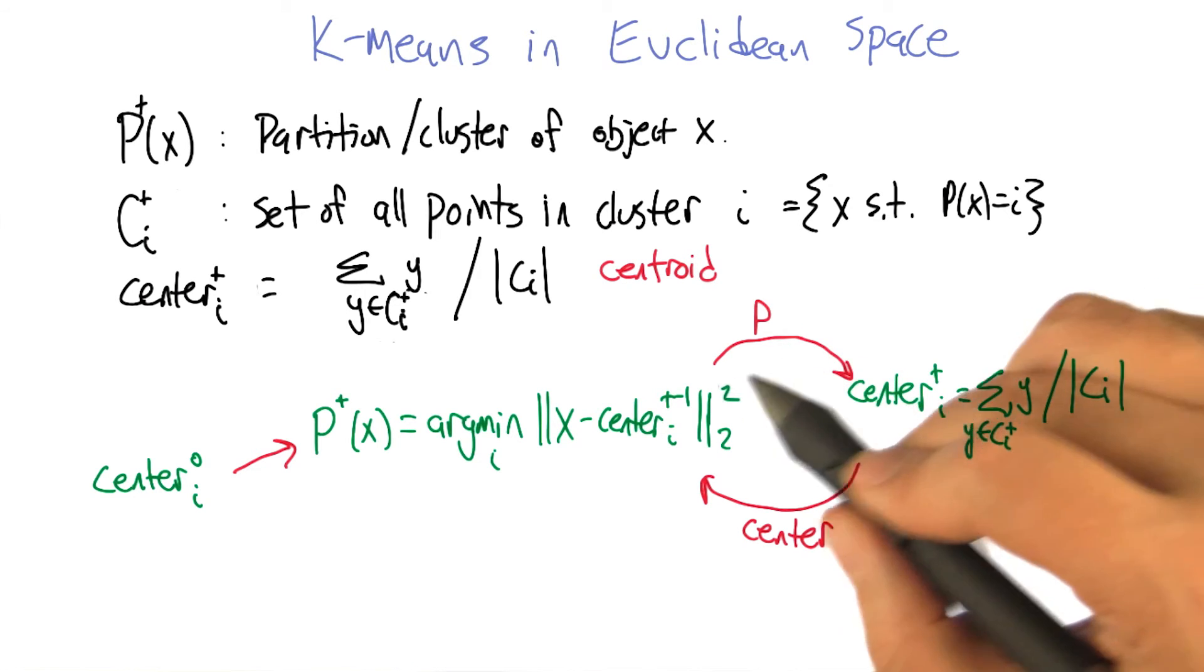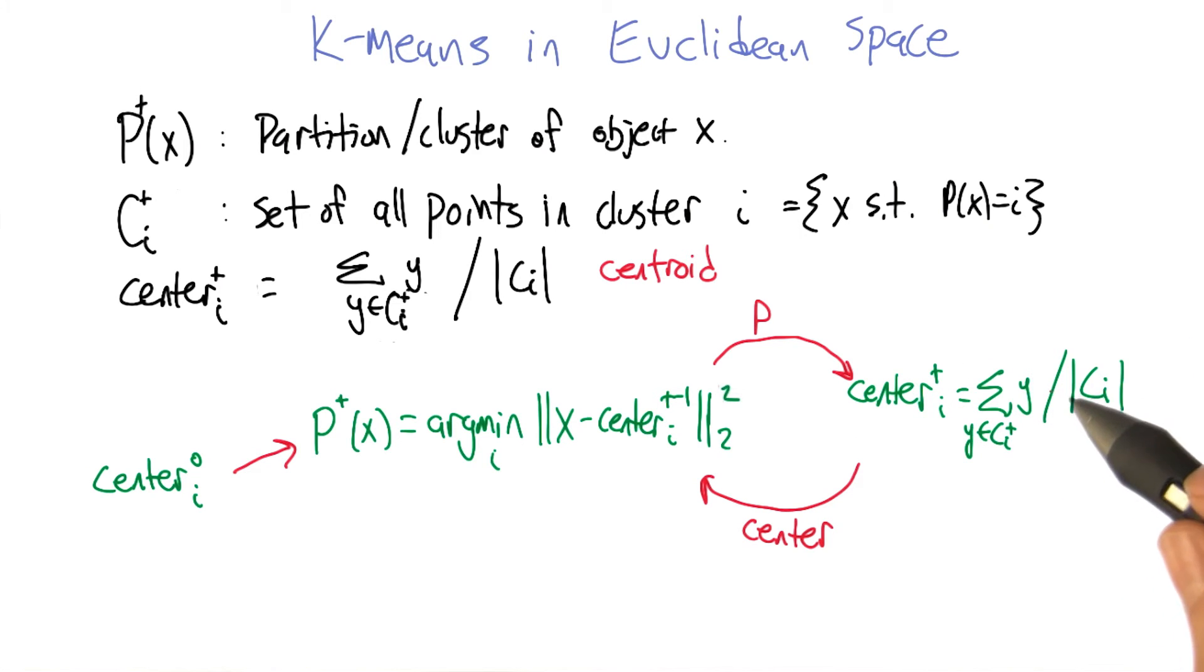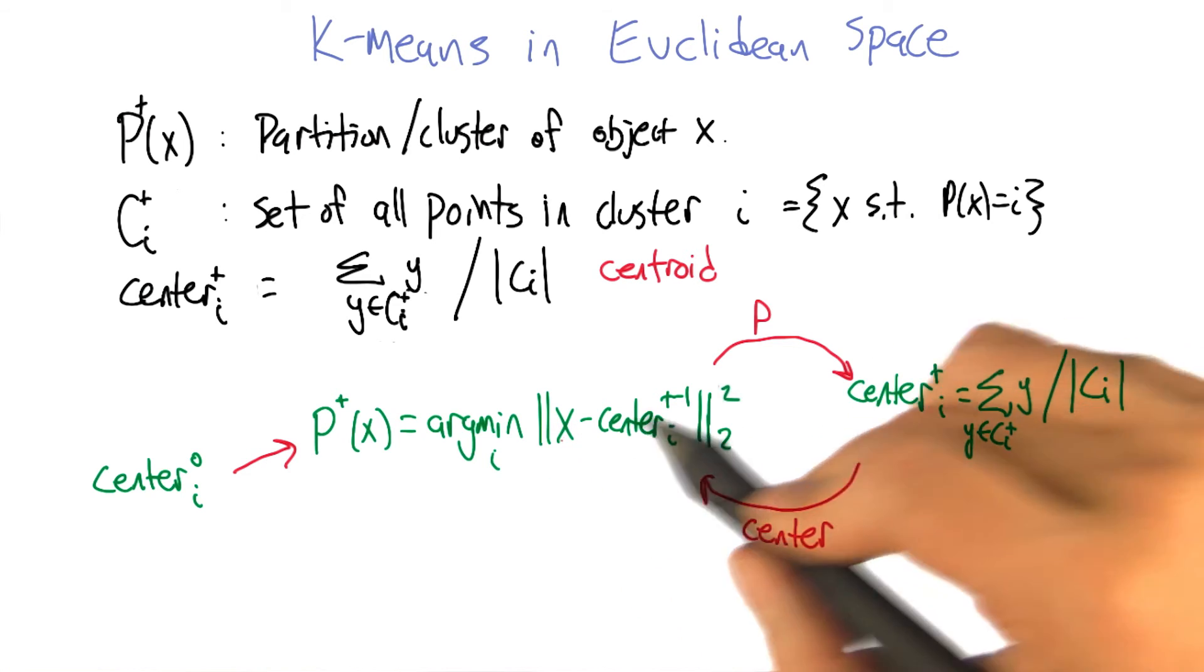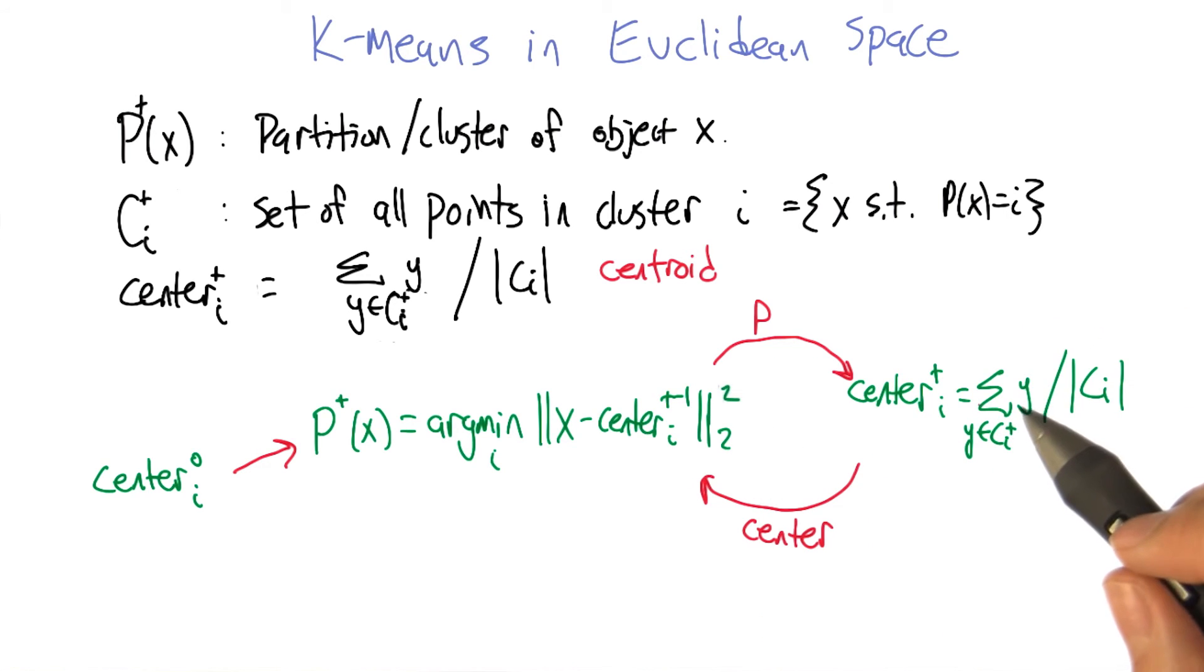We hand that partition to the process that computes the center. It's now using the other representation of the clustering, C_i. It adds the points together, divides by the number of points in that cluster, and hands those centers back to recompute the clusters. We're ping-ponging back and forth between these two processes, with t getting updated after every cycle.